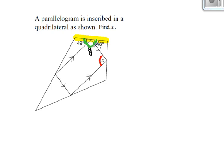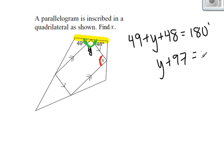Because of that straight line, 49 plus 48 plus Y equals 180 degrees. So 49 plus Y plus 48 is 180. I can do this math and solve for Y. Y plus 97 equals 180, therefore Y equals 83 degrees.